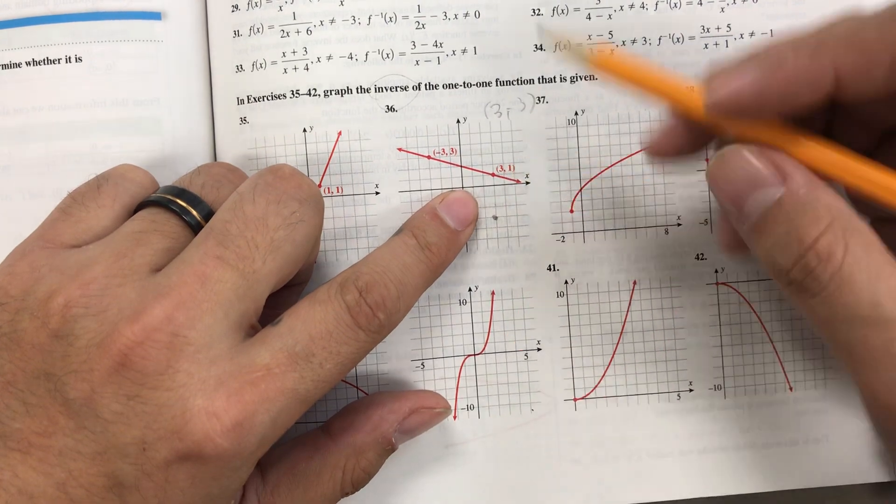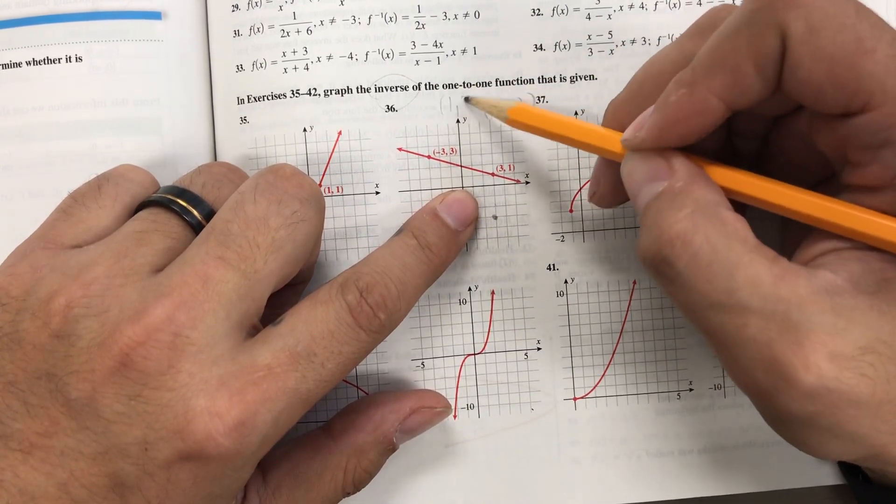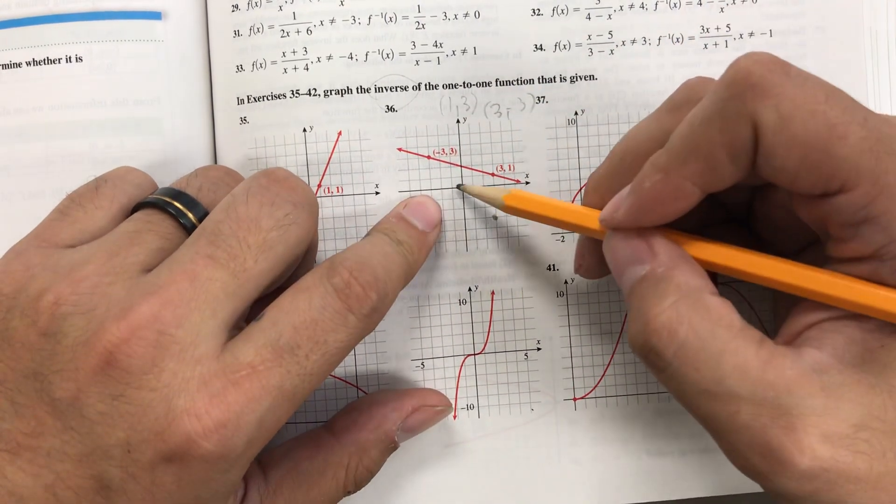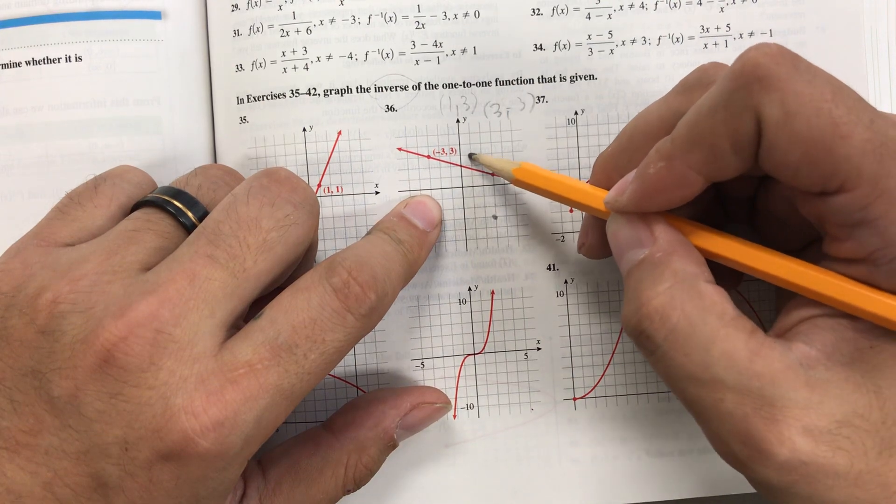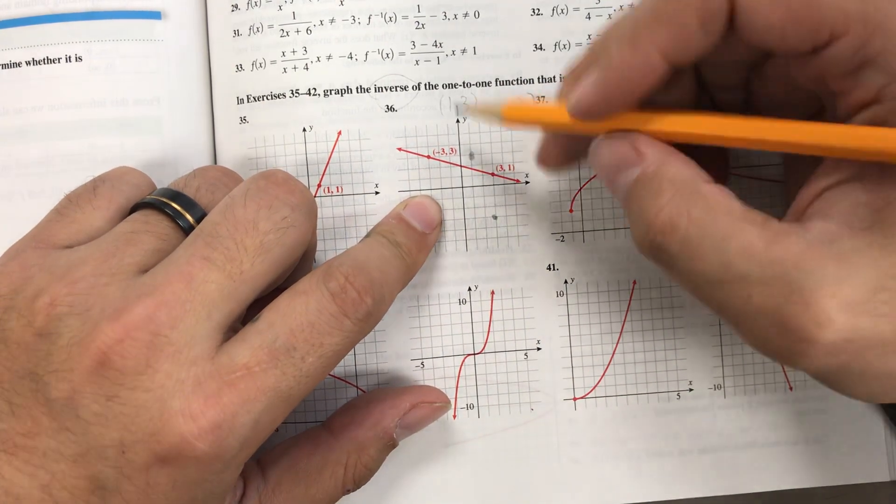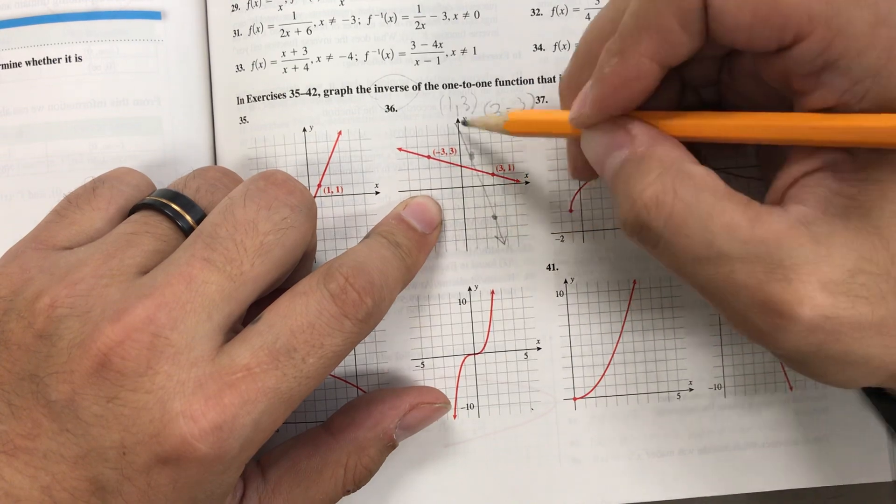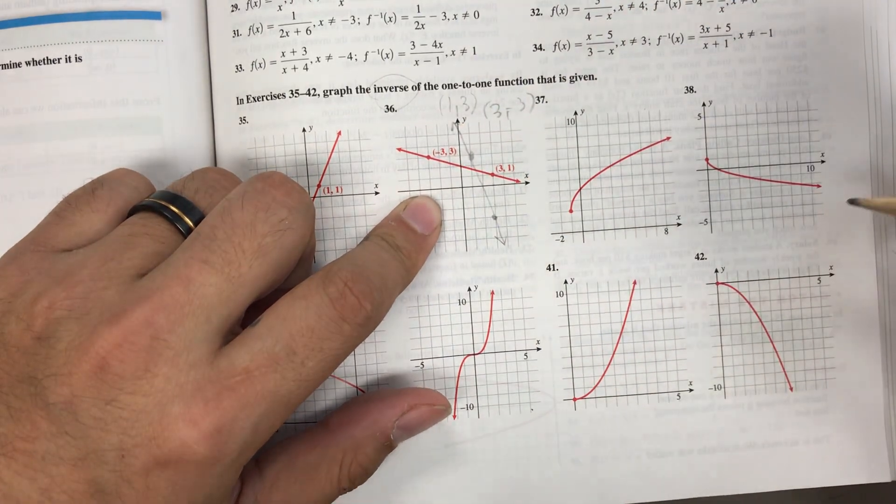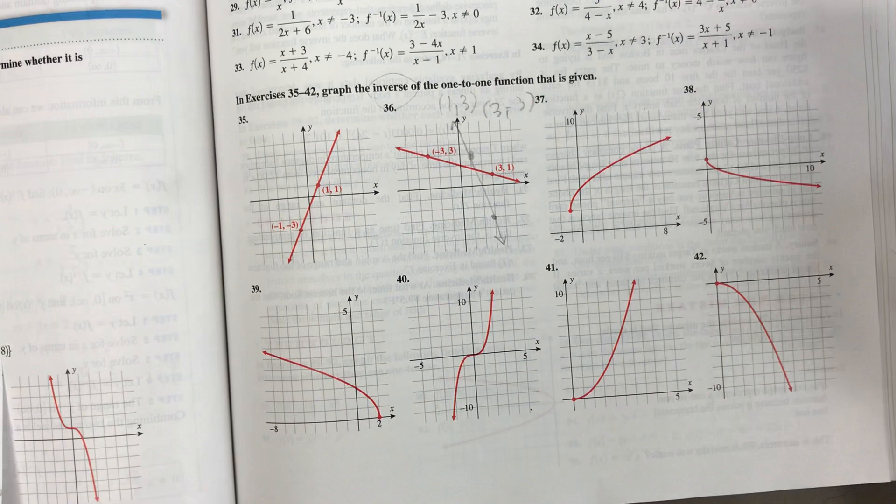All right, I've got another coordinate, 3, 1. So if I switch it around, I get 1, 3, and that's my other coordinate. So go over 1, up 3, 1, 2, 3. And then just draw a line between those two points. And you've got your inverse function. Pretty easy, right?